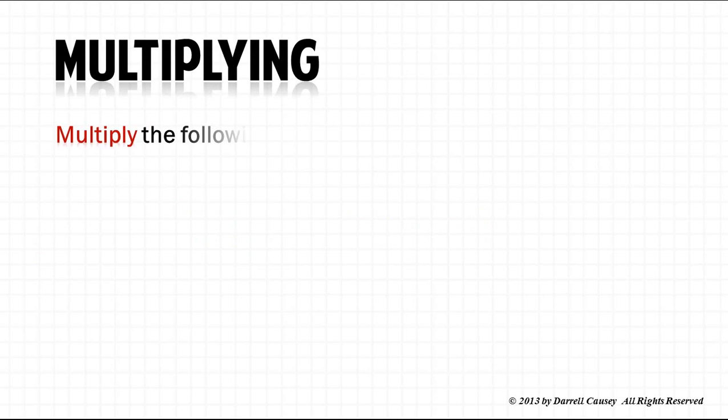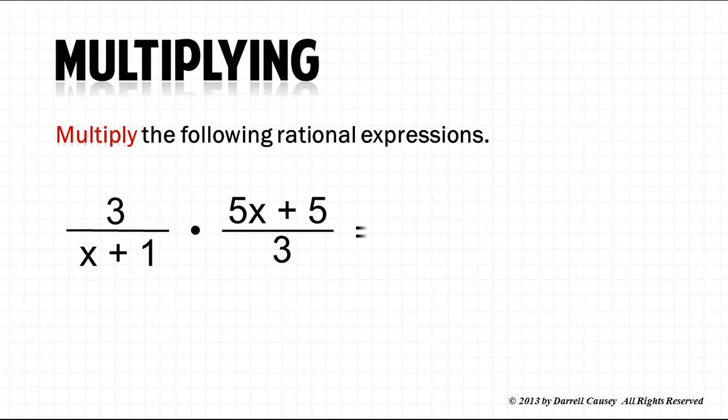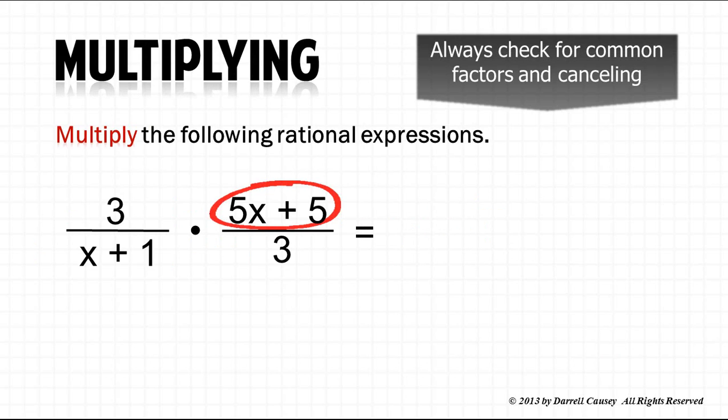Multiplying rational expressions. Let's take these two and multiply them together. And one of the first things we want to do is always check for common factors in canceling. And you'll note there, there's a common factor in the top. So let's take that 5 out. And we'll get 5 times x plus 1. And then note, we can cross cancel there. And we can cancel out the 3s.